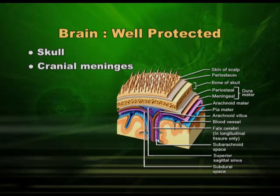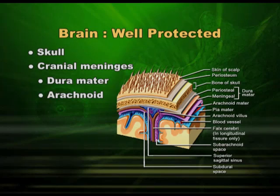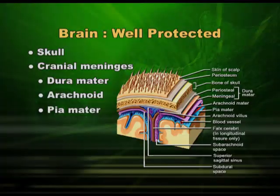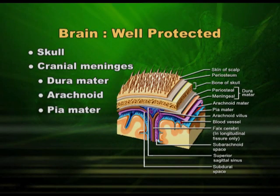These meninges are named dura mater, arachnoid, and pia mater. Dura mater is the first meninges present just after the skull, and pia mater is the membrane present just outside the brain tissue. Between the two is a thin membrane called arachnoid. A fluid is filled between these membranes. You can imagine that the skull is hard and the brain tissue is very soft. Between these two, there are three membranes enclosing two compartments which are filled with fluid, supplying a cushion to the brain tissue.